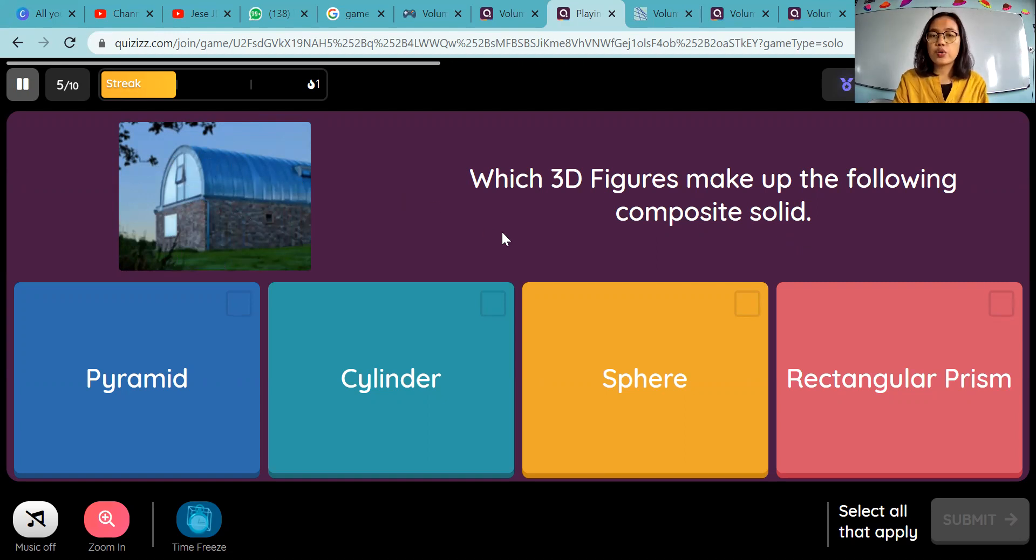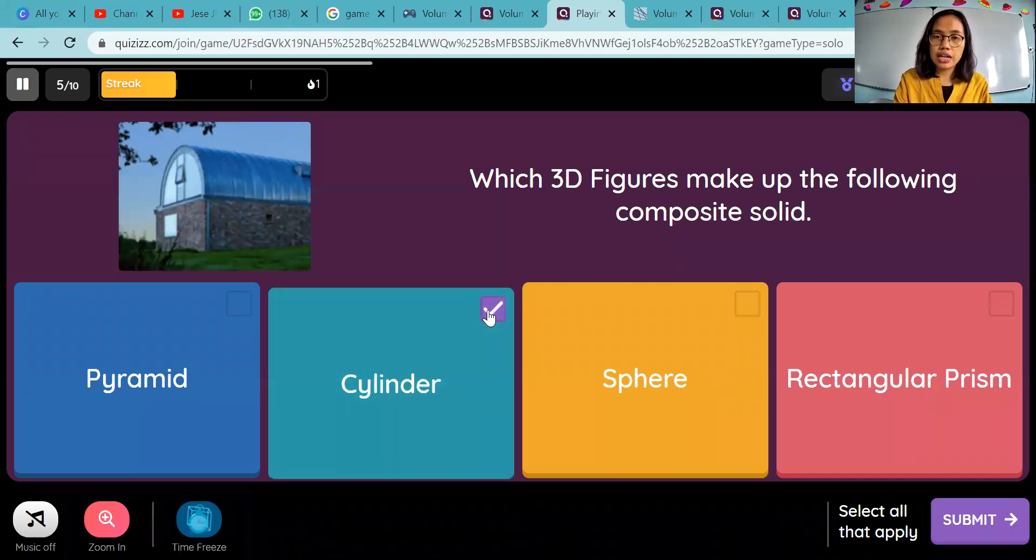So to answer the question, the 3D figures that make up the following composite solid is, yeah. We can check cylinder and, of course, rectangular prism. Same with cuboid. Yeah, rectangular prism is a cuboid.